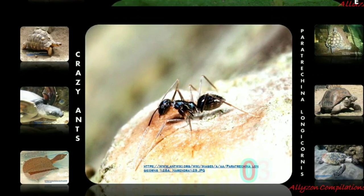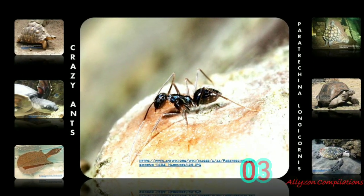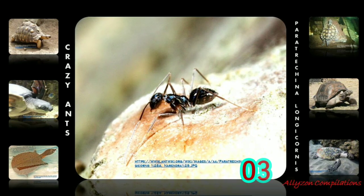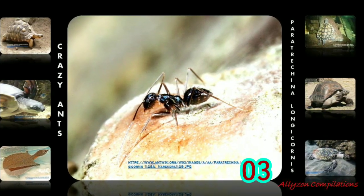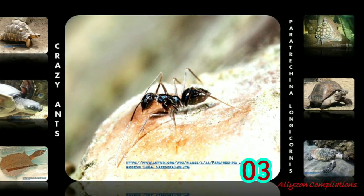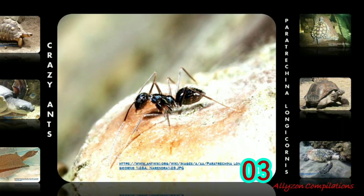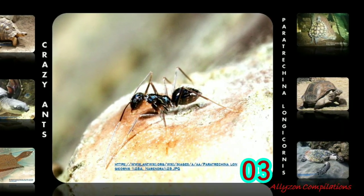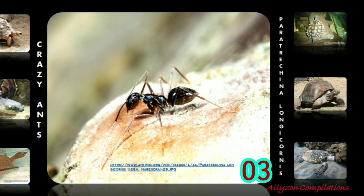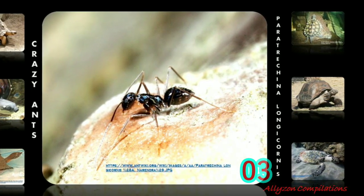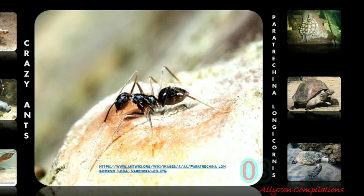Crazy ants may be found sporadically over the entire U.S., but are very common in Florida and along the Gulf Coast. The longhorn crazy ant, also known as the black crazy ant, is a species of small dark-colored insect in the family Formicidae. These ants are commonly called crazy ants because instead of following straight lines, they dash around erratically.